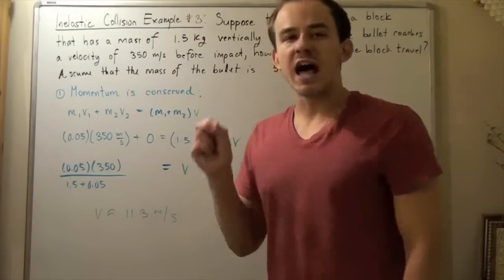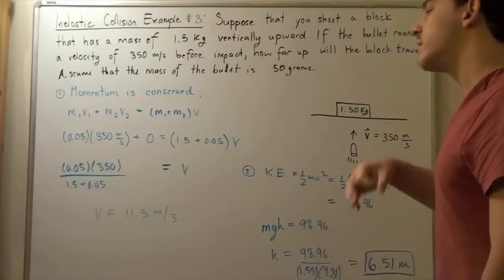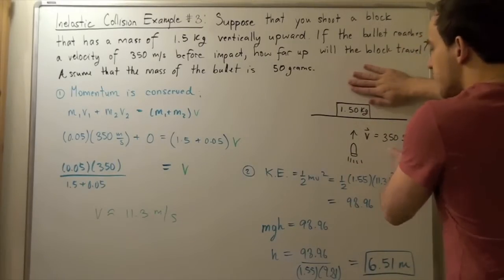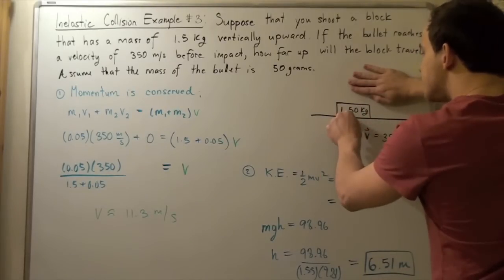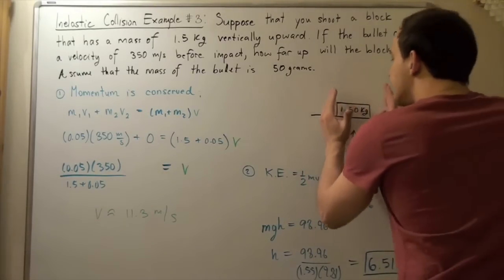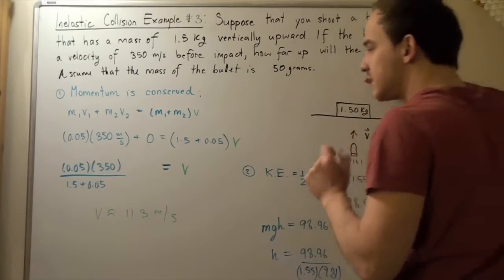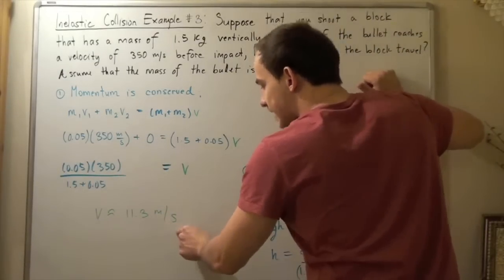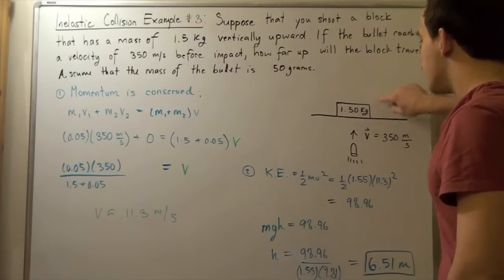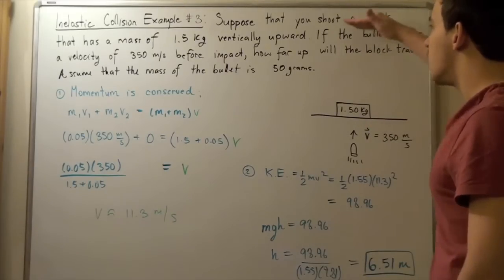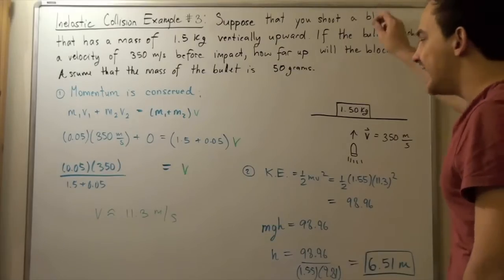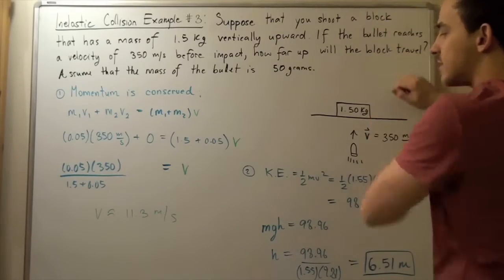This is the final velocity of the block and the bullet. When the bullet gets embedded in the block, the system begins to travel with a velocity of 11.3 meters per second. Eventually, that system of the bullet and the block will come to a stop. Its velocity will be 0, and we want to find the height at which the velocity is 0.